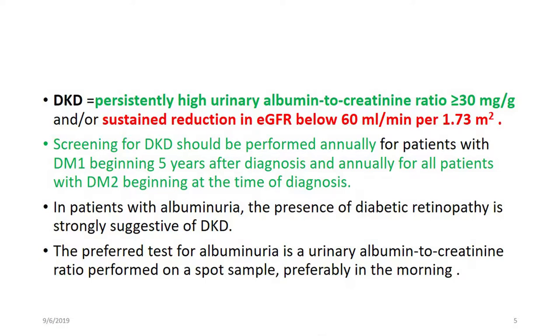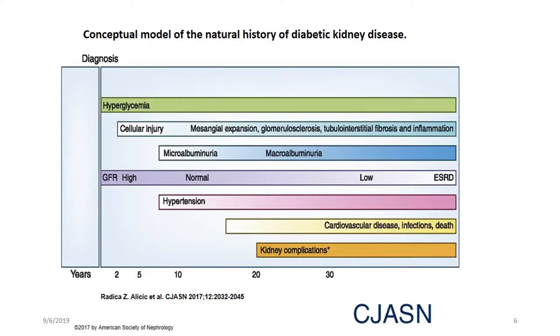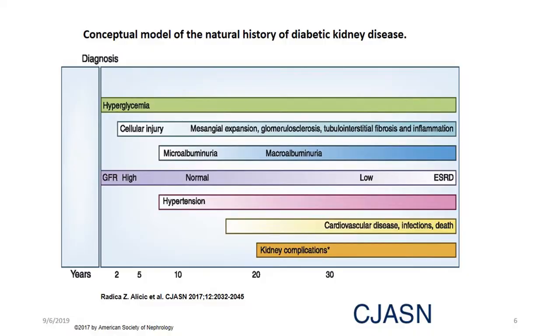This figure shows the natural history of diabetic kidney disease. Starting from 2 to 5 years after diagnosis, GFR can still be high. Starting from 10 years after diagnosis, there is microalbuminuria, and then cellular injury and pathophysiological processes occur throughout, including mesenchymal expansion, glomerular sclerosis, tubular interstitial fibrosis, and inflammation. According to this pathophysiological process, GFR can range from high to normal or low, and ESRD develops gradually after about 20 years. This figure is mostly related to type 1 diabetes; in type 2 diabetes, depending on the degree of glycemic control, that pathophysiological process can change.